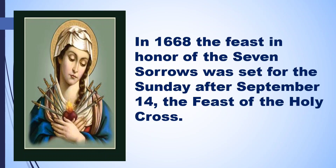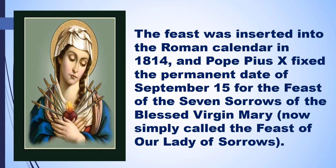In 1668, the feast in honor of the Seven Sorrows was set for the Sunday after September 14, the Feast of the Holy Cross. The feast was inserted into the Roman calendar in 1814, and Pope Pius X fixed the permanent date of September 15 for the Feast of the Seven Sorrows of the Blessed Virgin Mary, now simply called the Feast of Our Lady of Sorrows.